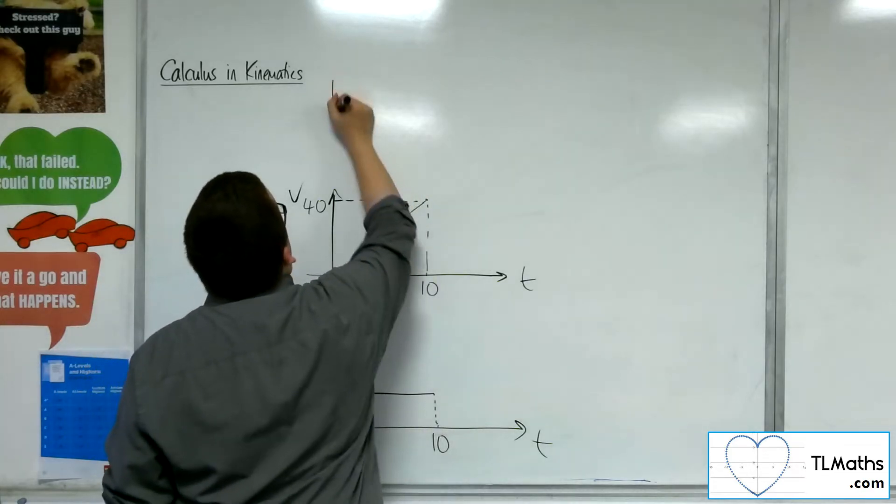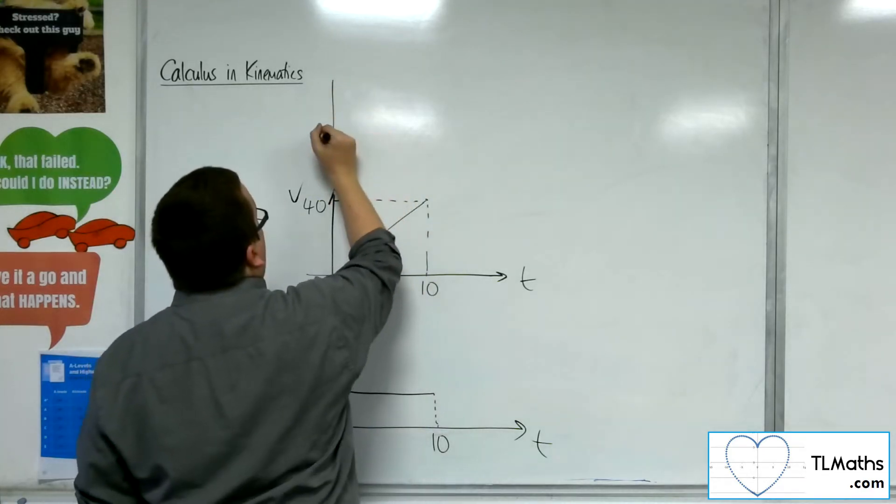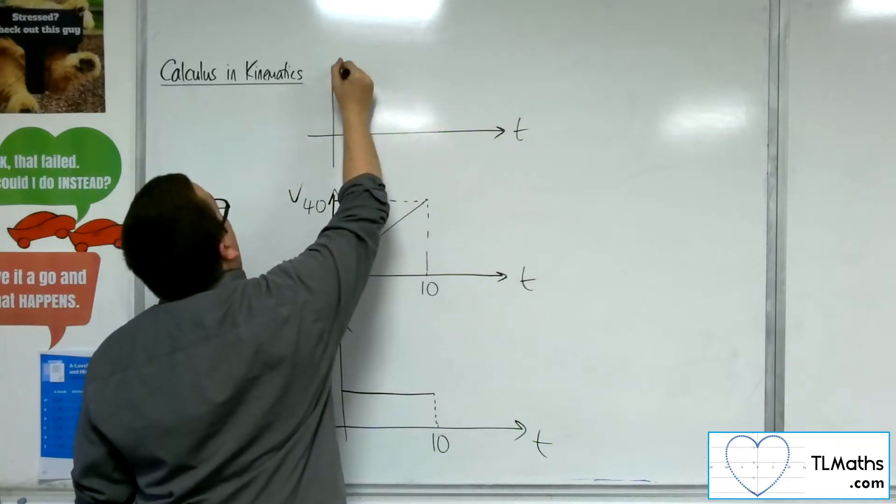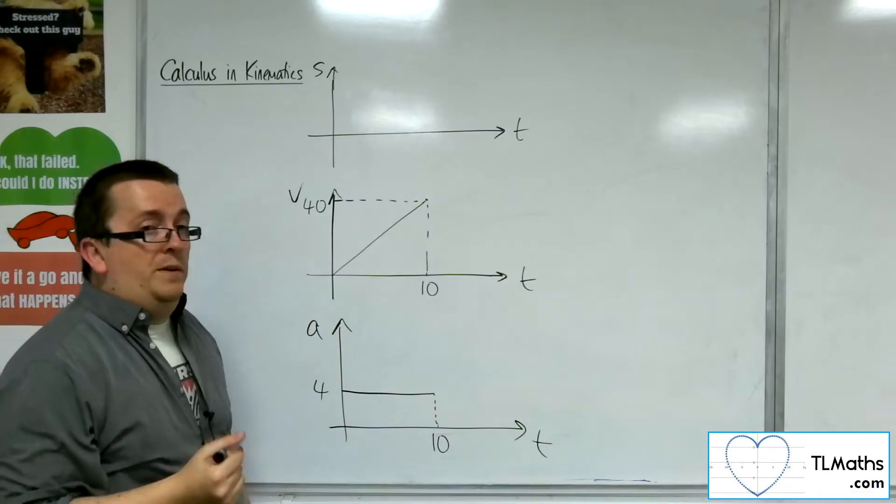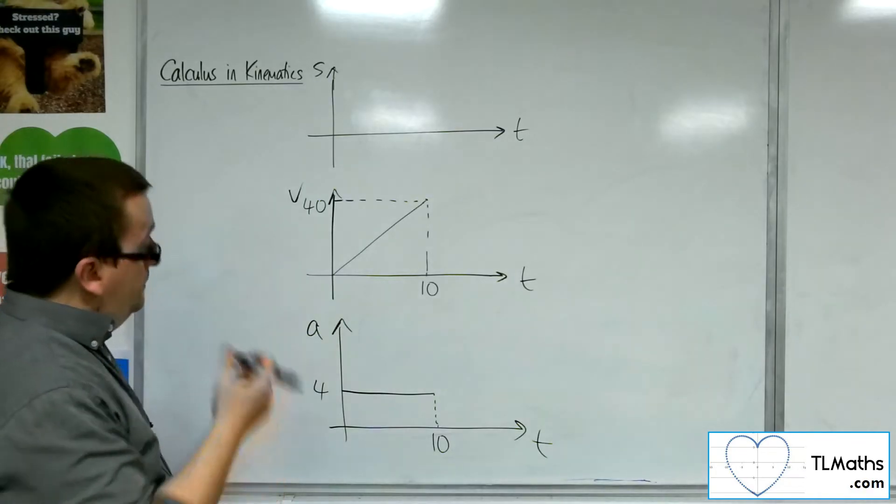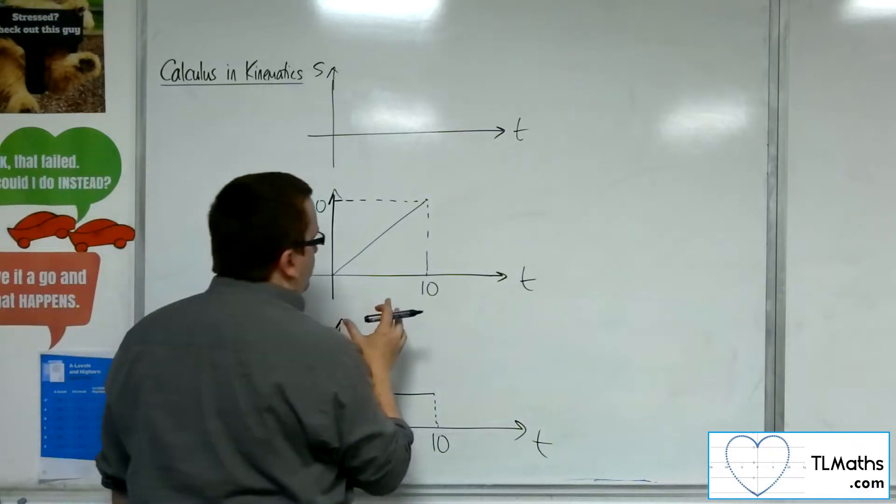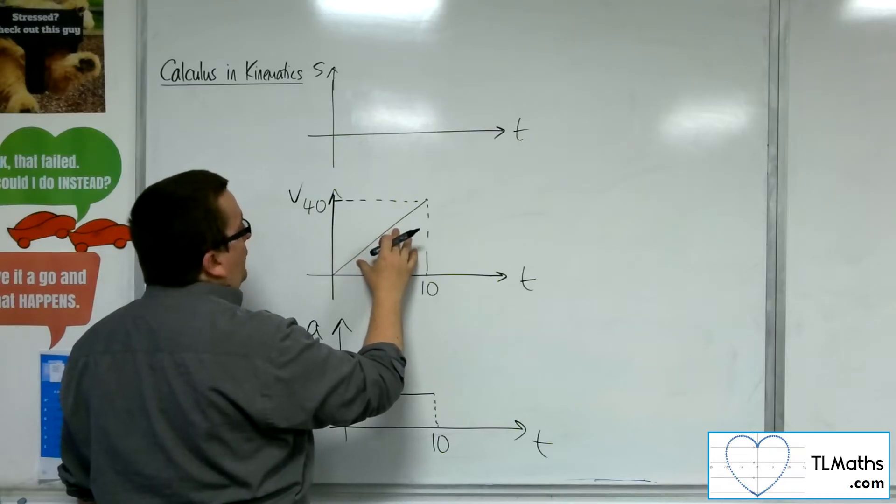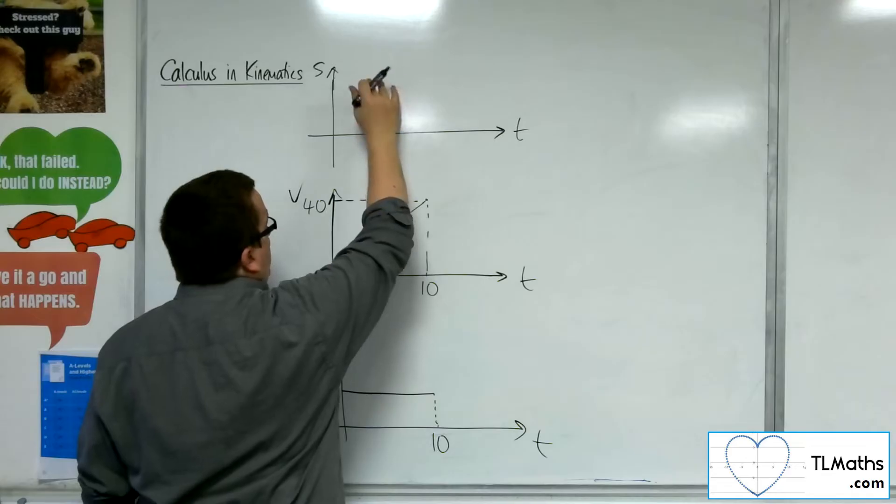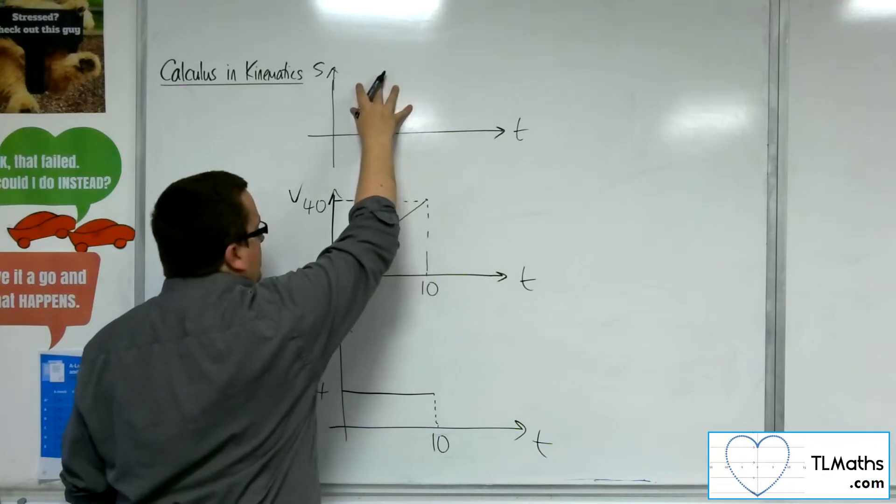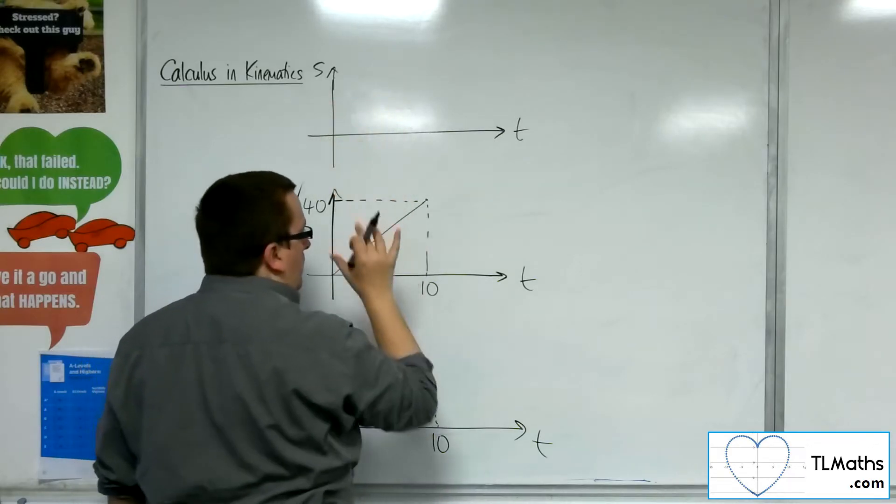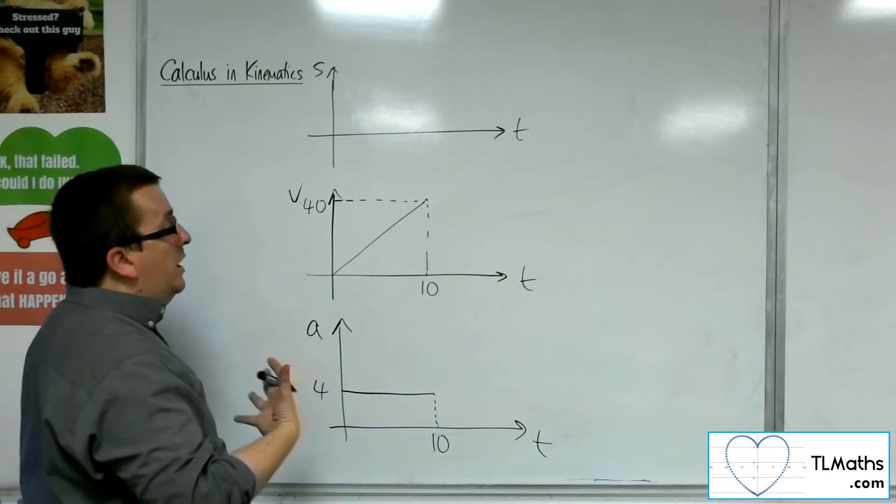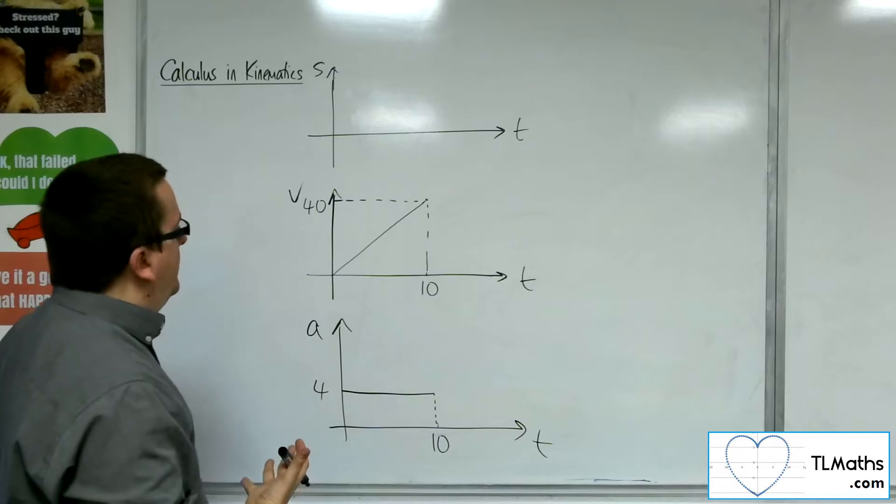Then we saw that if that's our velocity, then I could then look at displacement. Now if this is then telling me the gradient of this line, the gradient of the displacement is this line, then I'm going to get some kind of curved motion going on, aren't I?